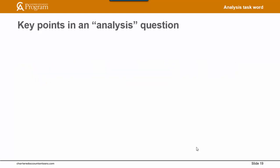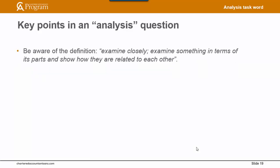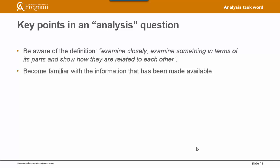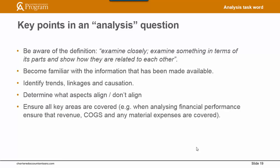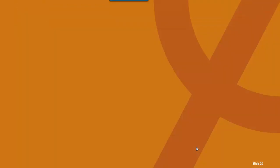Let's cover some key points when answering an analysis question. Be aware of the definition — examine something closely in terms of its parts and show how they are related to each other. Become familiar with the information that has been made available. Identify trends, linkages and causation. Determine what aspects align and don't align. Ensure all key areas are covered — for example, when analyzing financial performance, ensure that revenue, COGS and any material expenses are covered. That's all for now on analysis. I hope you found this useful. Thank you.